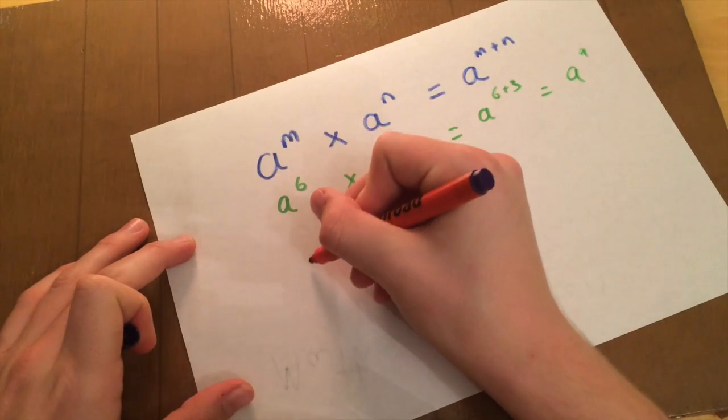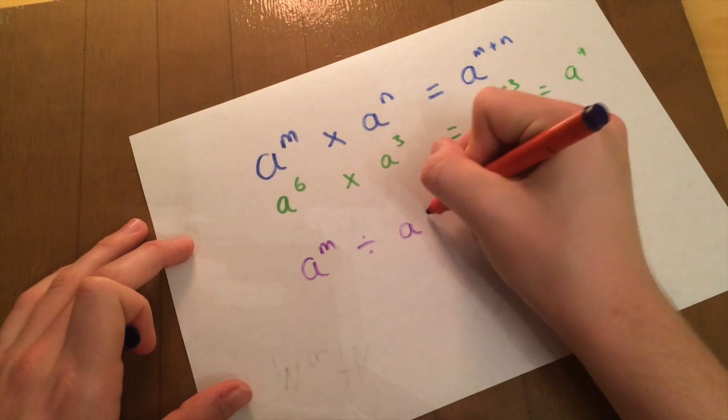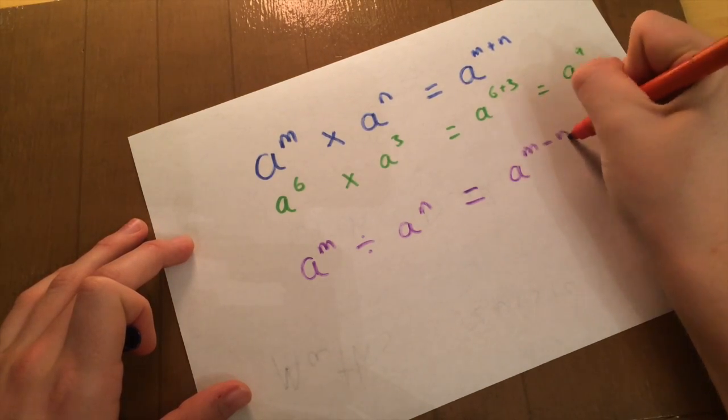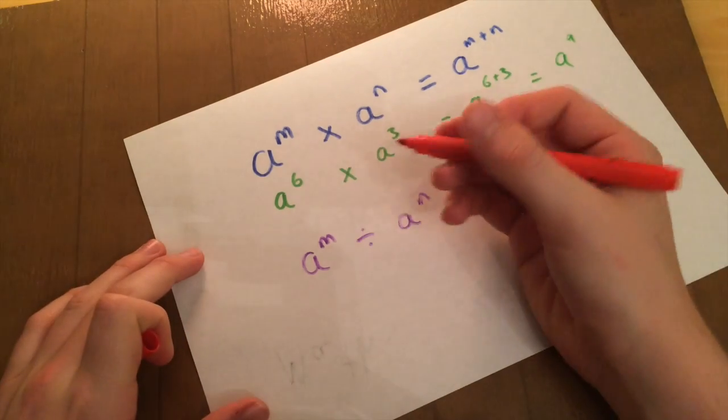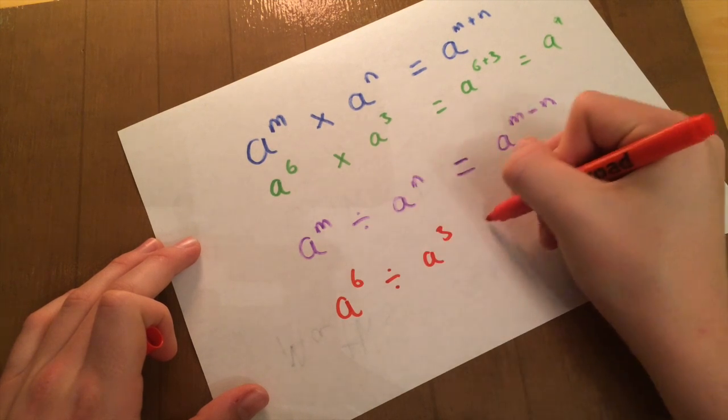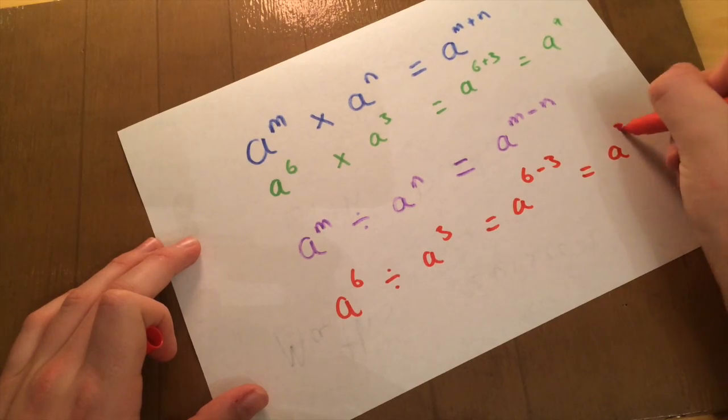Alright, next is the exact opposite. So A to the M divided by A to the N equals A to the M minus N. So if we take the exact same example, A to the 6 divided by A to the 3 equals A to the 6 minus 3, and that equals A to the 3.